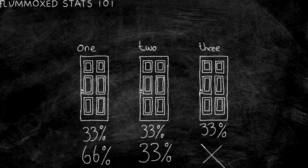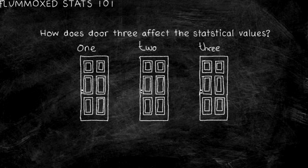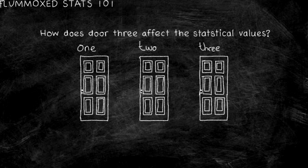Let's look at this mathematically. For the 50-50 school of thought, we disregard the open doors — you've not picked it and there's nothing behind it. For the 66% school of thought, however, we keep the third door within the equation, leading to a change. This means changing doors is more statistically viable.